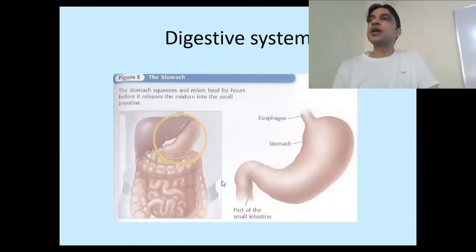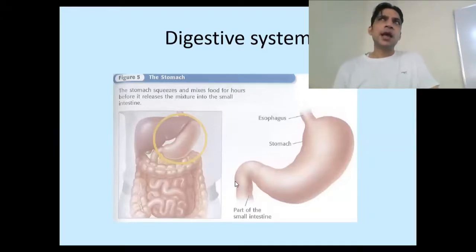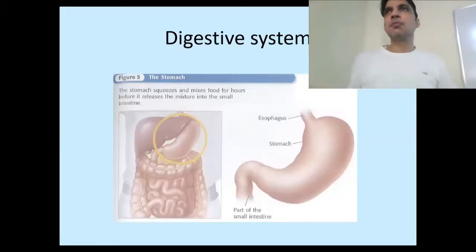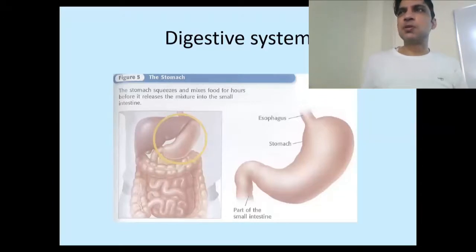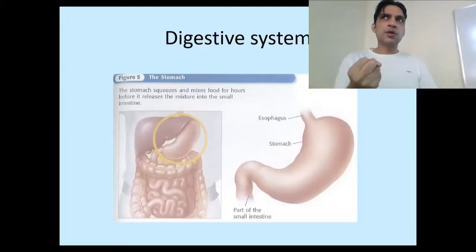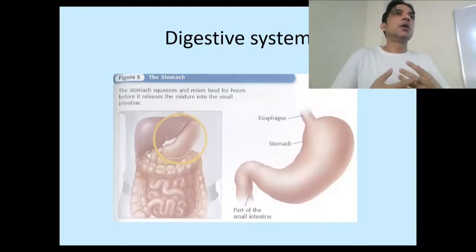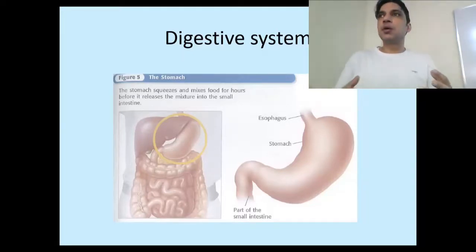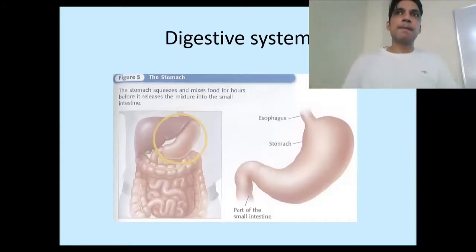So the stomach does two things: mechanical digestion and chemical digestion. After the stomach's action, the food is sent to the next part of the digestive system. At this point the food is a semi-solid type of stuff called chyme. This semi-solid liquid no longer contains intact proteins — they have been broken down into simpler polypeptides and amino acids.